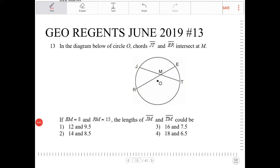In a diagram below of circle O, chords JT and ER intersect at M. If EM is equal to 8 and RM is equal to 15, then the lengths of JM and TM could be.